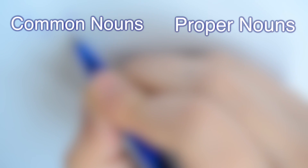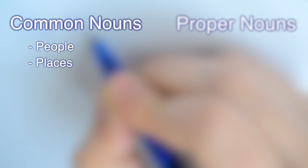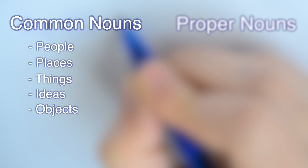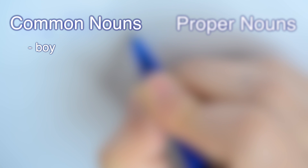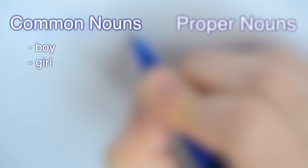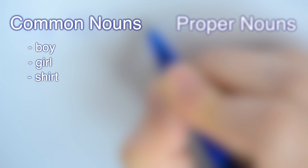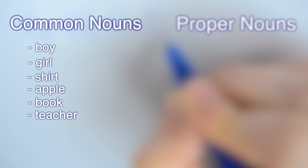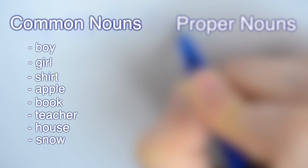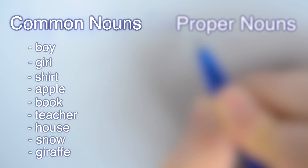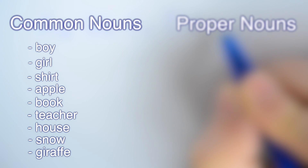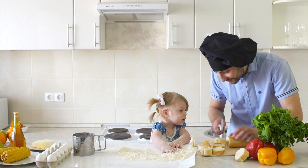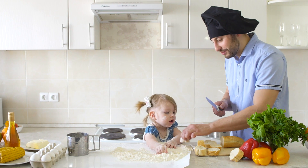A common noun includes people, places, things, ideas, and objects. Words like boy, girl, shirt, apple, book, teacher, house, snow, giraffe, etc. The stuff around us — the everyday items you see and touch and use — are common nouns, and there are a lot of them.